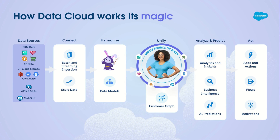Here's how Data Cloud works — how all the magic happens. First, we start with connecting: bringing in data from various sources using built-in connectors like S3, GCP, or Azure, whether through bulk or streaming, mobile or web applications, or directly through APIs. Once data is in the system, we harmonize it — preparing the data and putting it into a standardized model so it's easy to work with. Because when you bring data from disparate systems, it's hard to know whether account one equals account two from a data modeling perspective. A canonical model allows you to put all the data into a single unified view.